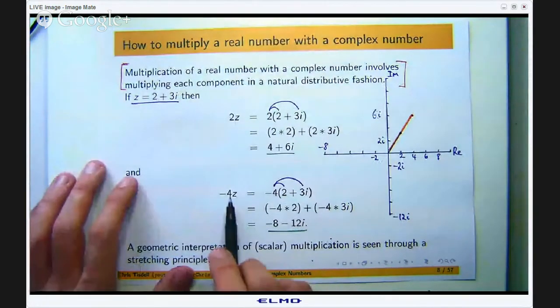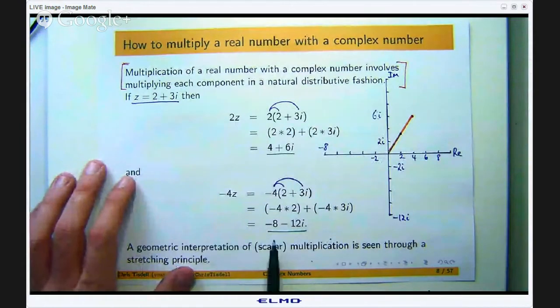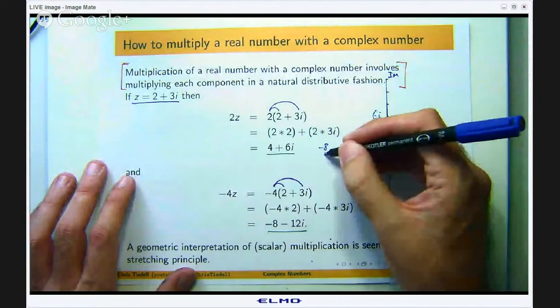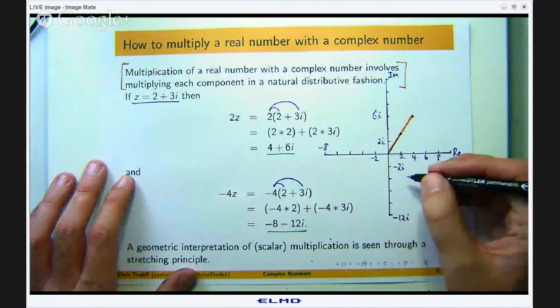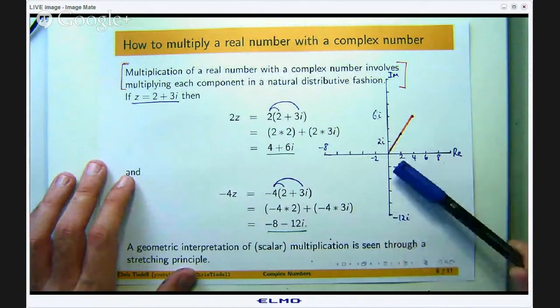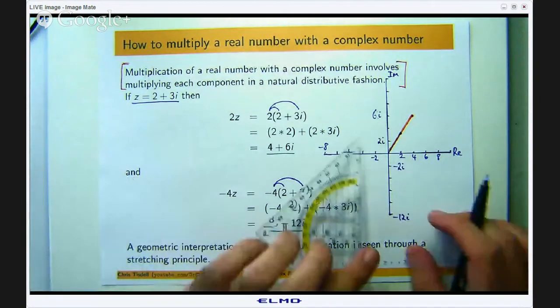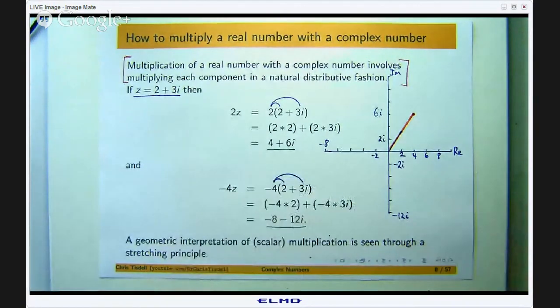What happens with this negative 4 then? Well let us plot this negative 4z in the complex plane. So I will go across here and down here. I think I have to go down a bit. Let me just fix that up.